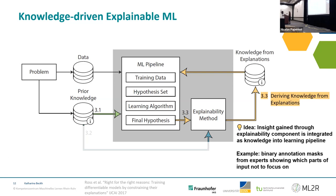For the third approach, the insight you gain is integrated back into the learning pipeline. As an example, you can use binary annotation masks from experts indicating what in an image not to focus on — such as watermarks — and integrate that into the learning algorithm as a regular advisor.